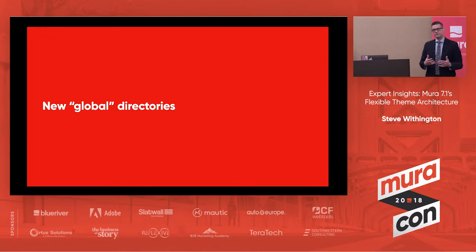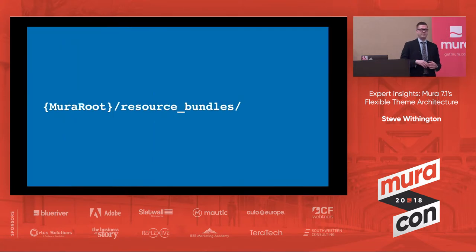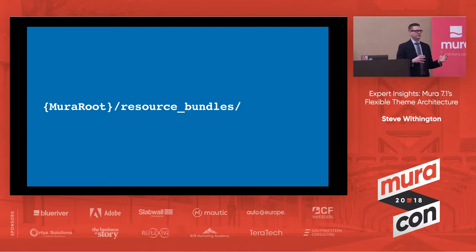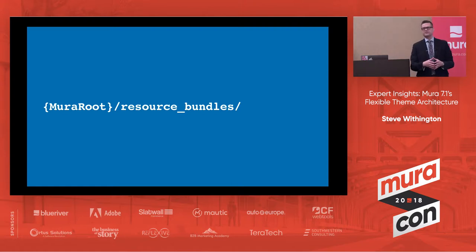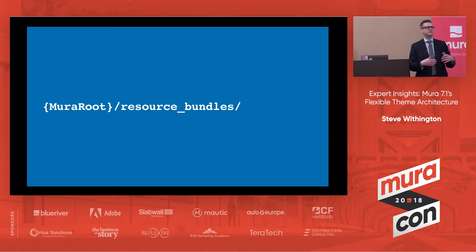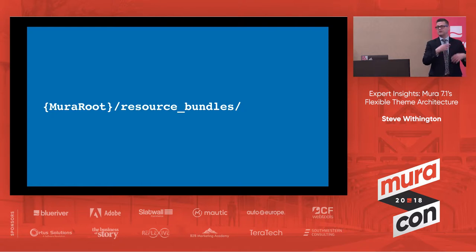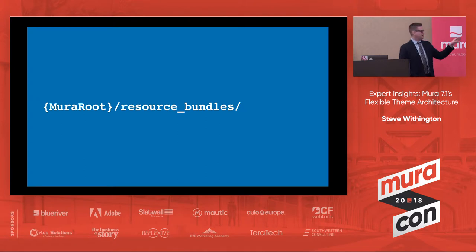Now, as Matt also alluded to in his talk, there are some new global directories. One is resource bundles. Not everybody uses these, but just in case for those of you that aren't familiar — they're essentially ways to translate commonly used labels and keys into multiple languages, based on the Java or the settings. You can modify those in your Mura admin, go change the language and region for your specific site, and it'll pull in whichever resource bundle matches that and use it for its translation.